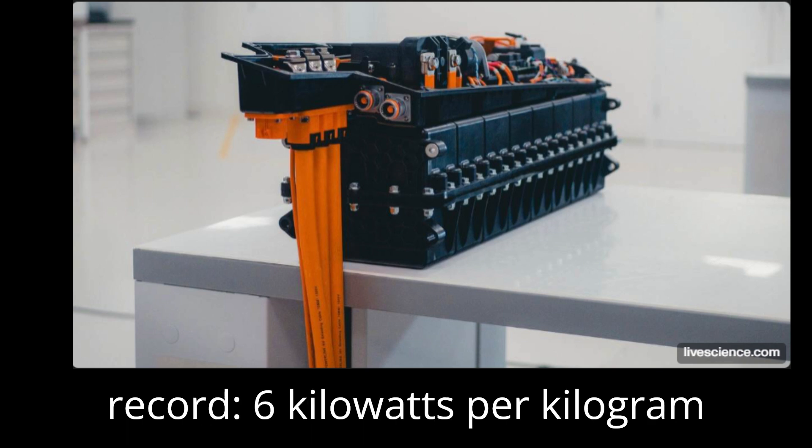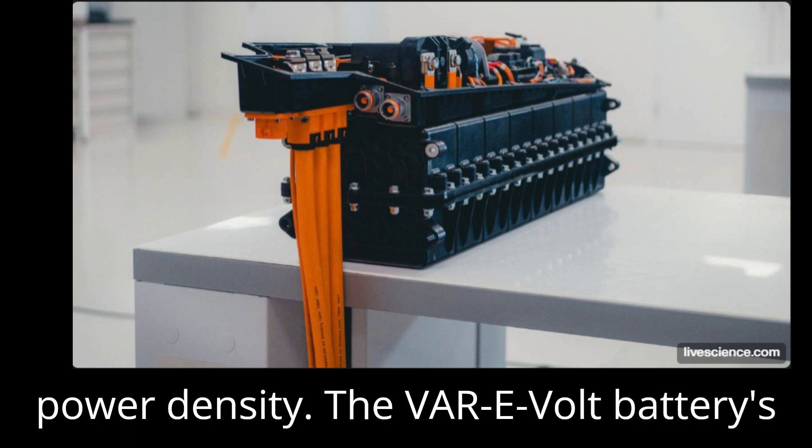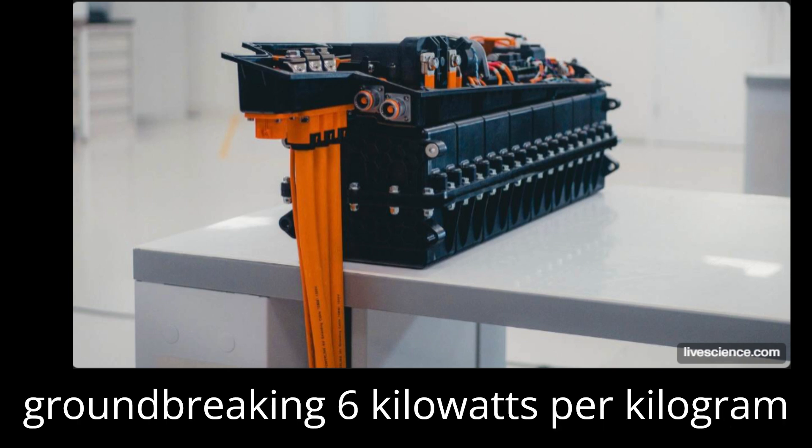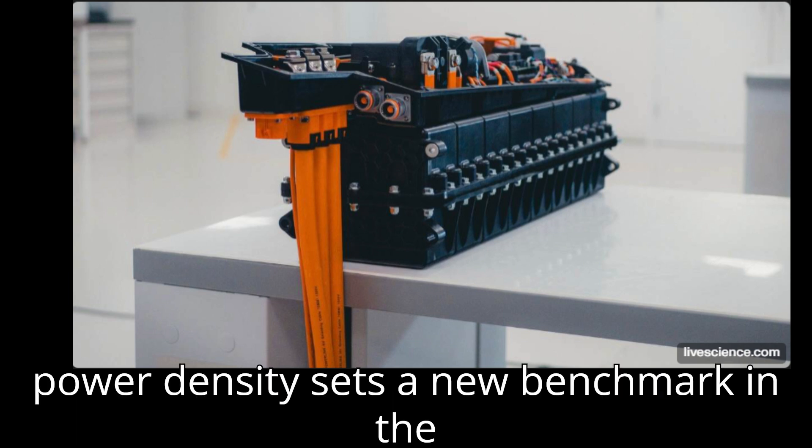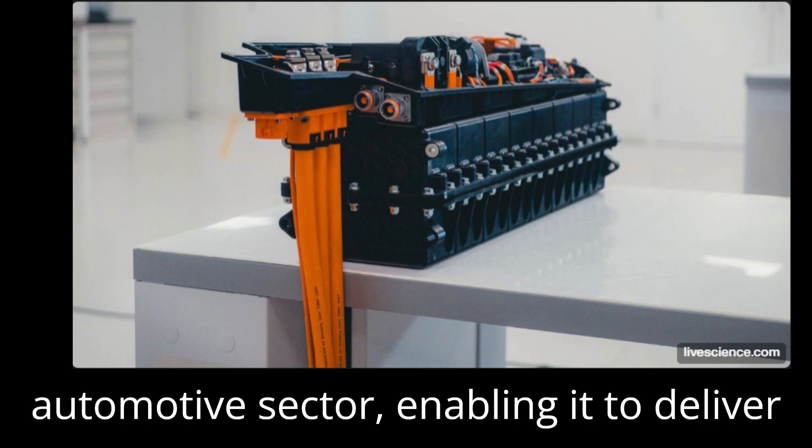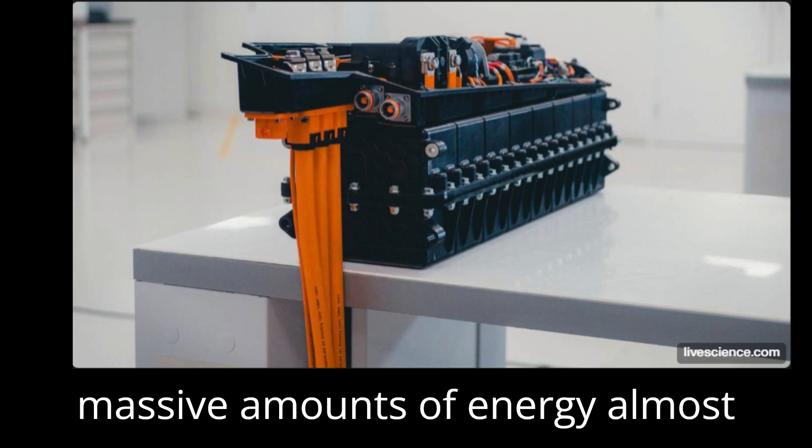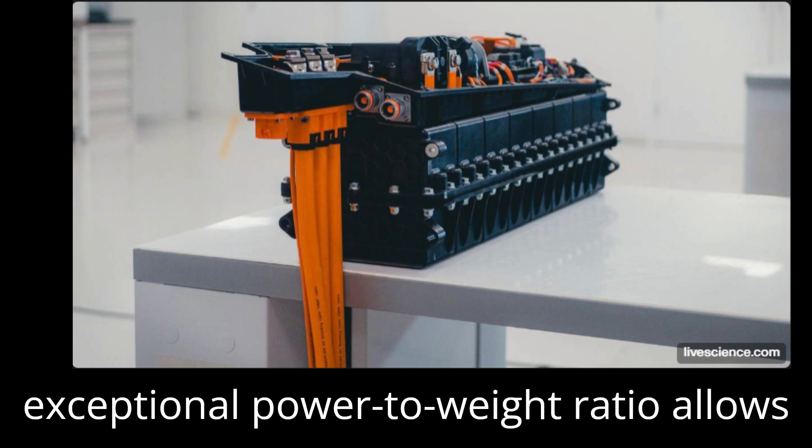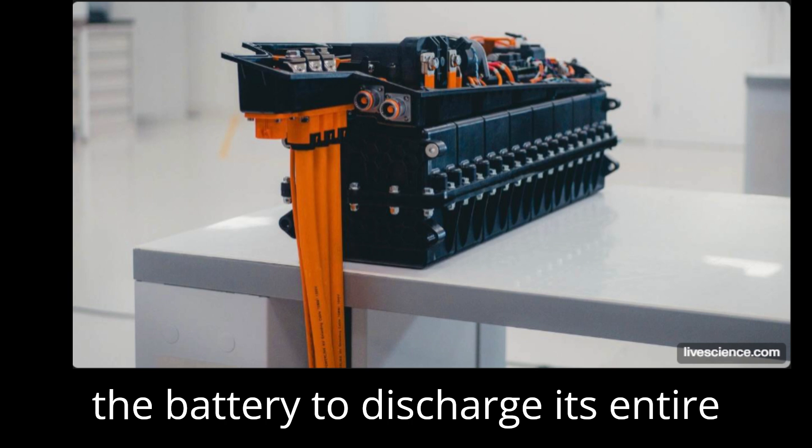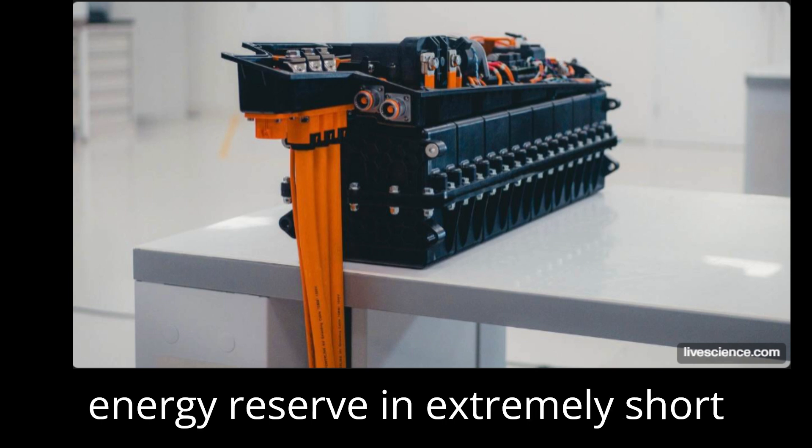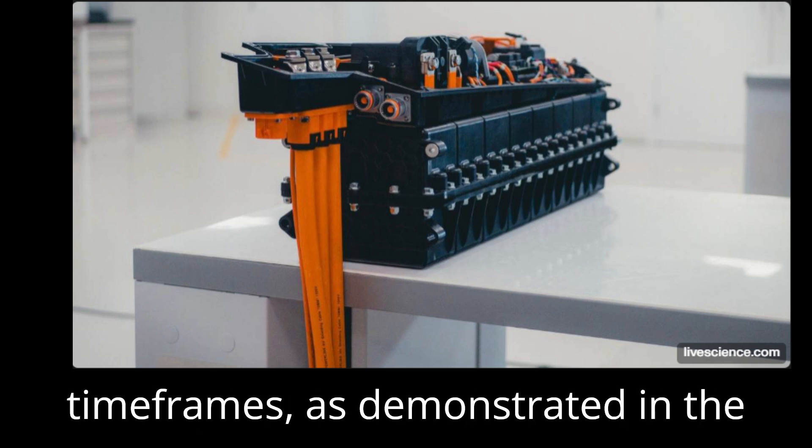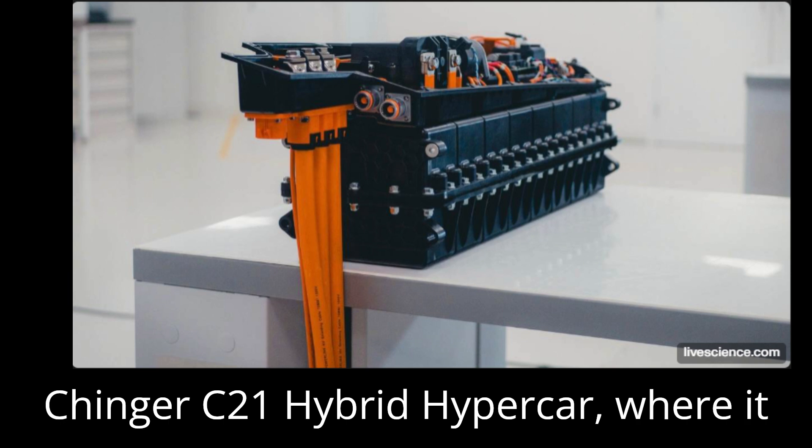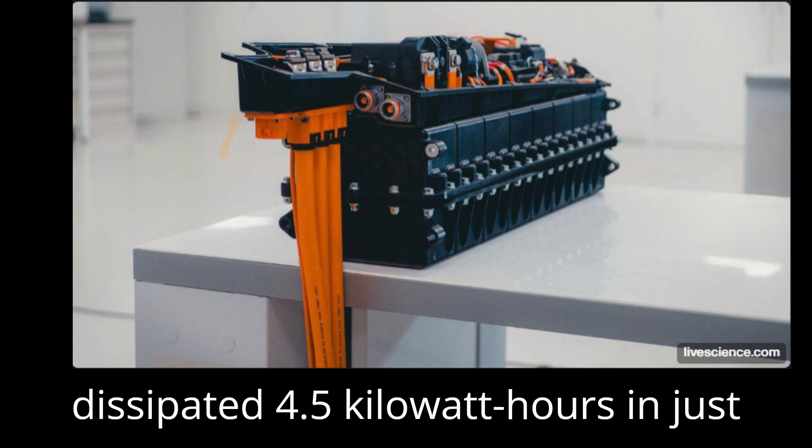The VAR-E-Volt battery's groundbreaking 6 kW per kg power density sets a new benchmark in the automotive sector, enabling it to deliver massive amounts of energy almost instantaneously when needed. This exceptional power-to-weight ratio allows the battery to discharge its entire energy reserve in extremely short time frames, as demonstrated in the Cinger C-21 hybrid hypercar where it dissipated 4.5 kWh in just 40 seconds.